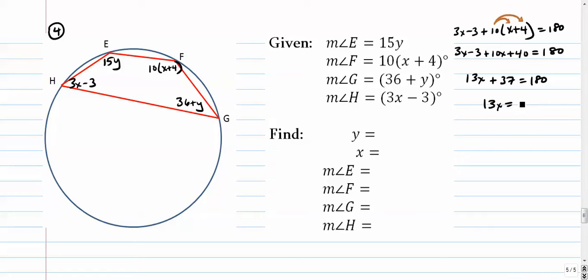13x equals, subtract 37 from both sides, 143. And that looks like an 11 to me.